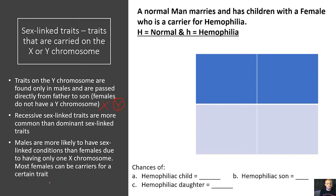Most females can be carriers for a certain trait. A female has an X, but she has an additional X to mask or cover that trait, so she won't have that condition most of the time. But a male has only one X and a Y, so if the mother carries that trait, it's going to be passed on to the son because he only has one X and doesn't have an additional X to mask or cover that trait.